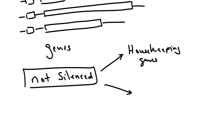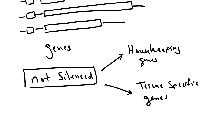The other subset would be tissue-specific genes. These are the genes that make one cell type different from another — for example, a neuron from a liver cell — giving them a different morphology and phenotype.